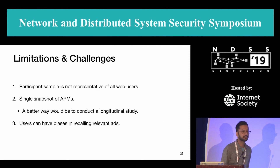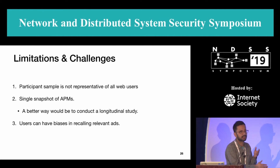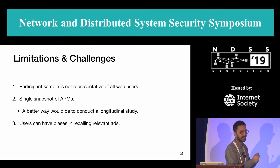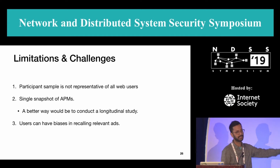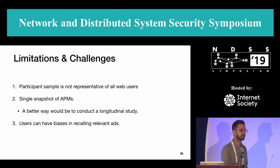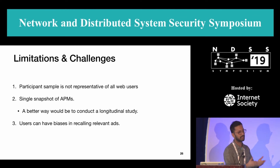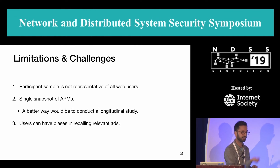Unfortunately, that's one of the limitations because it's a single snapshot. We just gave the browser extension to the user, they took the survey, and we collected interests. Ideally, if we had the extension deployed over a period of time, we could see how interests got added to the APM profile. That would be ideal and we are in the process of conducting a study like that. For this study, we have no way of telling how the profiles evolved because there is no timestamp associated with each interest.